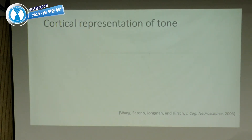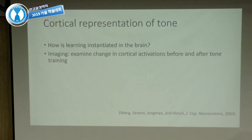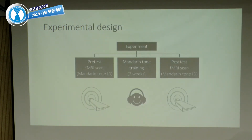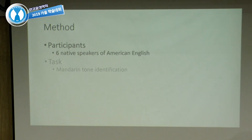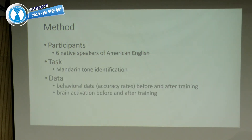We then looked at the cortical representation of tone. We find behavioral improvement in tone identification and ask: can we find correlates at the cortical level? We used brain imaging to examine changes in cortical activation before and after training, through a fortunate collaboration with Joy Hirsch, a cognitive neuroscientist at Cornell. We had participants perform Mandarin tone identification while in the scanner, then complete the traditional eight-session training program over two weeks, then were scanned again at post-test.